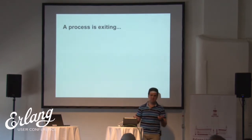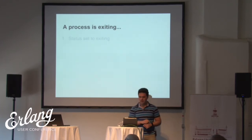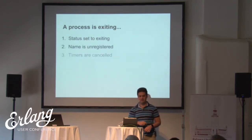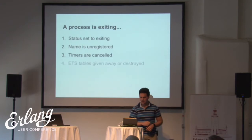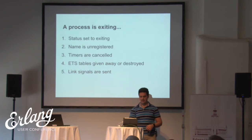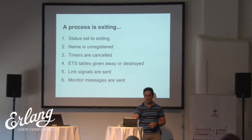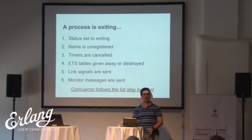If a process is exiting, the status of the process is set to exiting, then the name is unregistered, then timers — if you are using them and don't want to send messages to this process — are cancelled, ETS tables are given away or destroyed, link signals are sent, monitor messages are sent. All of this happens because the process exited. The previous version of Conqueror thought that all this happened in an instant. Conqueror currently follows this list step by step. If there is a possibility that some processes get a monitor message before some others, then this interleaving will be explored.